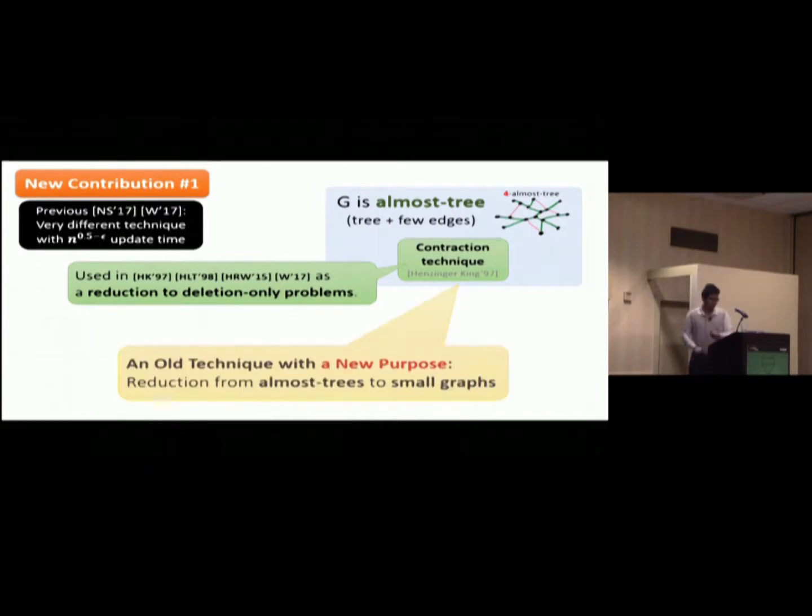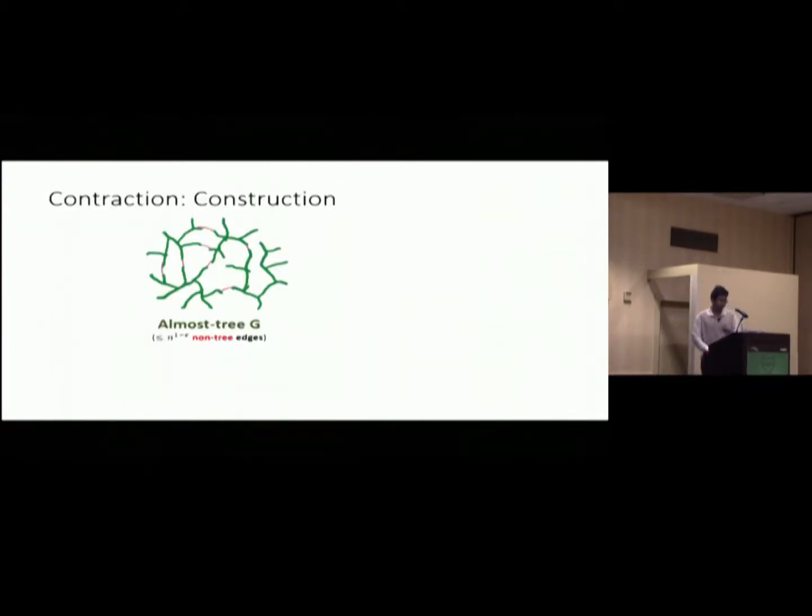But the idea here is that, we just identify that this old technique can be used in a totally different way. So, this technique can be used as a reduction when you solve the problem on almost tree. And reduce it to the same problem on a super small graph. So, just a totally new purpose. So, to tell you briefly how it works.